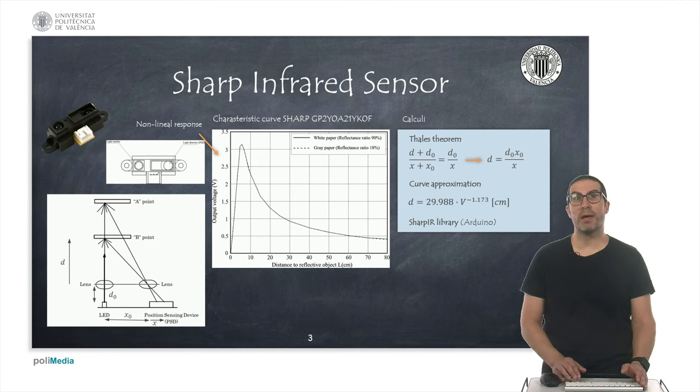Of course, this can be corrected by approximating the curve, and this is what, for example, the ArduinoSharpIR library does.